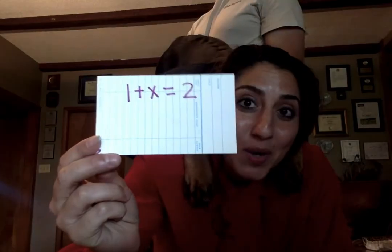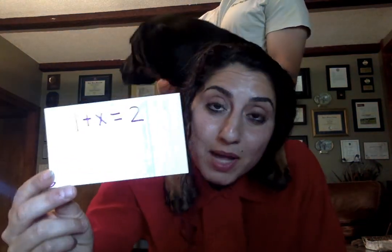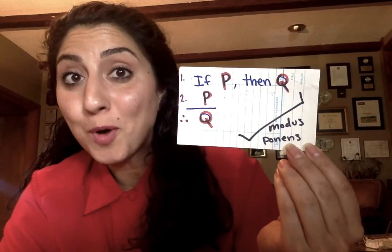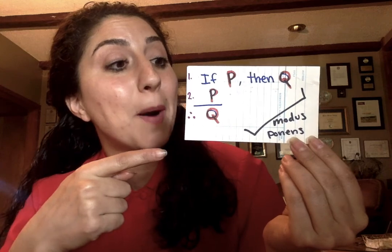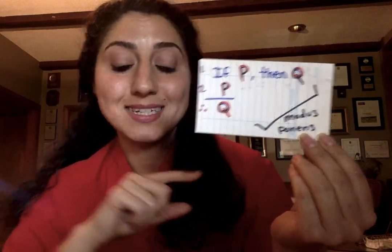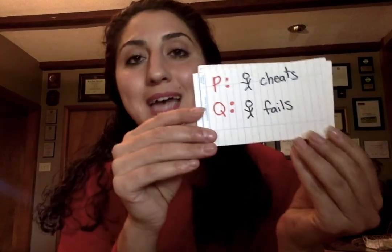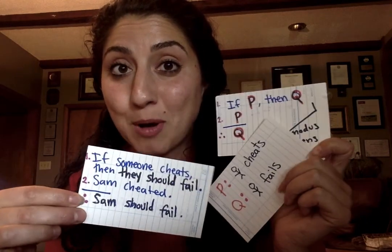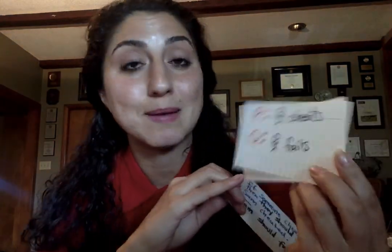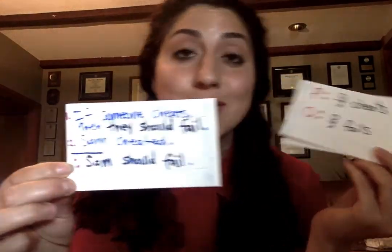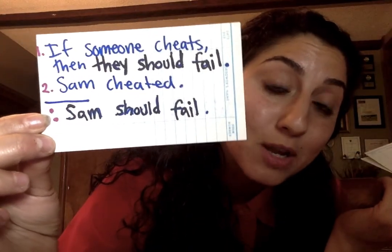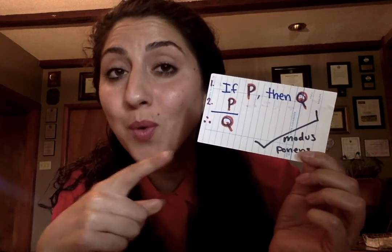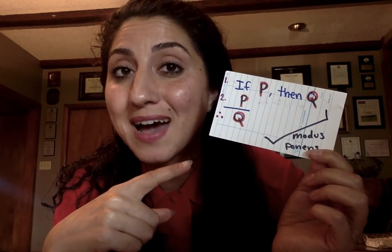In mathematics, you have equations like one plus x equals two. Just like mathematics gives you formulas, logic also gives you formulas. This one is a valid argument form called modus ponens. Just like in math, you need to have an idea about what you can put in for those variables. For this modus ponens argument, if p is 'somebody cheated' and q is 'somebody failed,' we get a valid argument. Whether or not it's true doesn't matter when discussing the valid form — because we followed the form consistently, we know we have a valid argument.